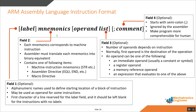The second field is the mnemonic. Assembly language consists of mnemonics, each corresponding to a machine instruction. Using a mnemonic, you can decide what operation you want to perform on the operands. The assembler must translate each mnemonic into its binary equivalent. The mnemonic field cannot start in column one; if it does, it will be interpreted as a label. The mnemonic field contains one of the following: a machine instruction mnemonic, an assembler directive, or a macro directive.